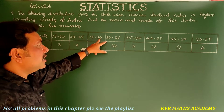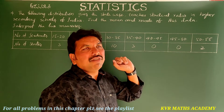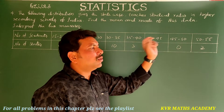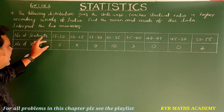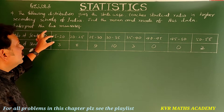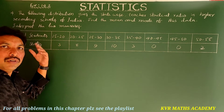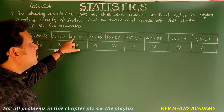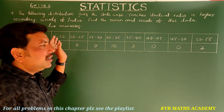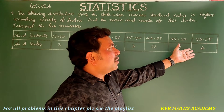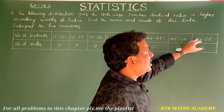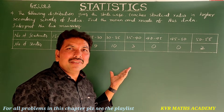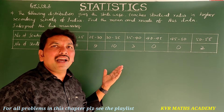The number of students goes from 15–20, 20–25, 25–30, and so on up to 50–55. The corresponding number of states are 3, 8, 9, 10, 3, 0, 0, 2. This means three states have a teacher-student ratio of 15–20, eight states have 20–25, and two states have 50–55. Now let us find the mode and mean for this data.